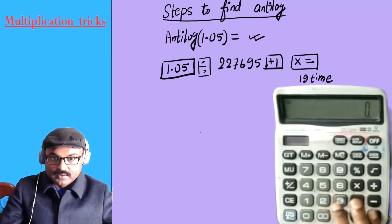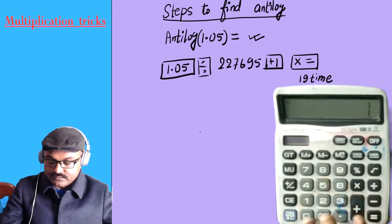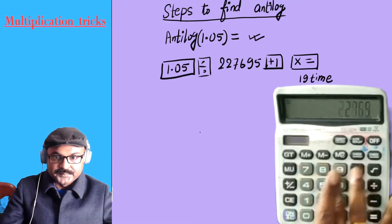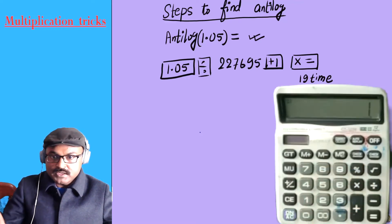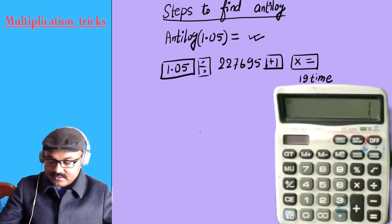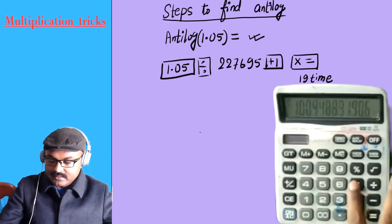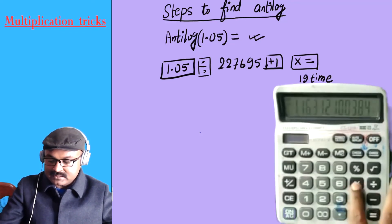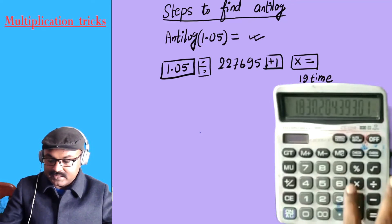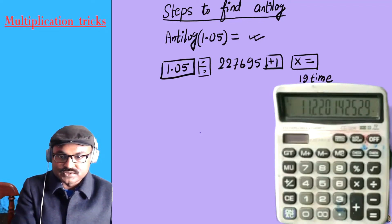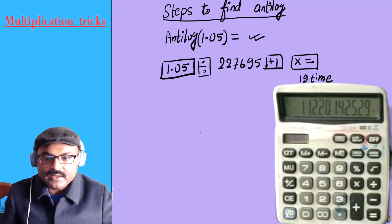So, 1.05 divide by 2.27695, plus one, and then press 'into equal to' 19 times. As per the method: into equal to one, two, three, four, five, six, seven, eight, nine, ten, eleven, twelve, thirteen, fourteen, fifteen, sixteen, seventeen, eighteen, nineteen. This is the scientific calculator result — not 11.22.